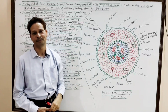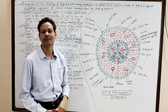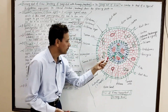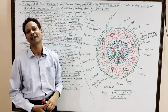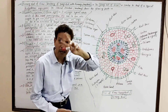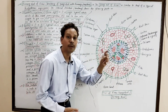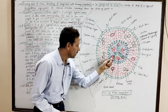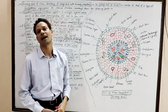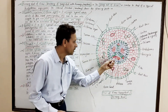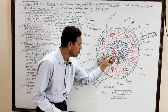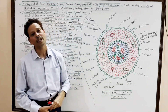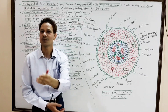Another important point: the xylem is exarch in condition. Exarch means the protoxylem — the first-formed xylem — faces outwardly. The protoxylem bifurcates and becomes Y-shaped. In the two arms of each Y, a canal is present — this is a resin canal. The metaxylem is late-developed, well-developed, and large-sized, always facing toward the center. So the small-sized protoxylem always faces outwardly — the condition is exarch.